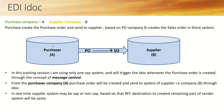Let's understand the requirement through this diagram. We have two companies: Company A is the purchasing company that wants to order some material or service, and Company B is the supply company that will supply the material or service. The purchase order is created in Company A and transferred to supply Company B. In this training session, one SAP system is used as a test system, and an IDoc will be triggered whenever the PO is created. The purchase order from Company A will be created and sent to the supplier system through the IDoc.